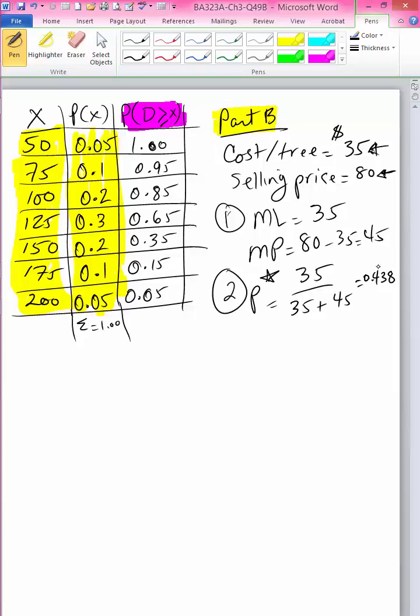The third step is to identify, or to place that critical probability along this axis right here. So when you place it along this cumulative column, you will see that 0.438 falls right here.